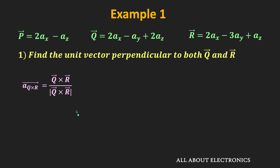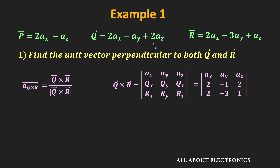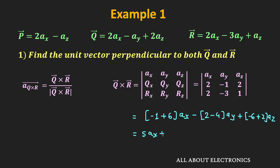We need to find Q×R using the determinant. The values of Qx, Qy, and Qz are equal to 2, -1, and 2. Similarly, the values of Rx, Ry, and Rz are equal to 2, -3, and 1. Simplifying the determinant, we get (-1+6)Ax - (2-4)Ay + (-6+2)Az, which equals 5Ax + 2Ay - 4Az.